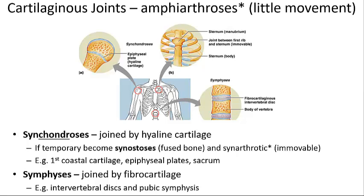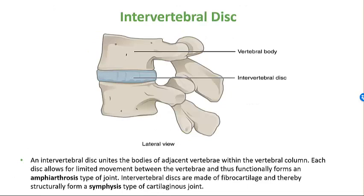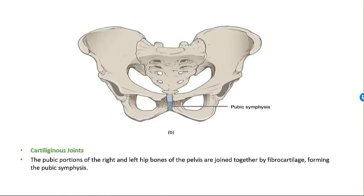Cartilaginous joints can be sub-categorized as synchondroses or symphyses. A synchondrosis joint is a rigid, highly cartilaginous bridge that unites the bones. One example is the cartilaginous joint between the ends of the ribs at the manubrium of the sternum; another is the epiphyseal plate holding the epiphysis of long bones to the diaphysis. Symphyses are where articulating bones are separated by a wedge or pad of fibrocartilage — for example, intervertebral discs between vertebrae, and the pubic symphysis.